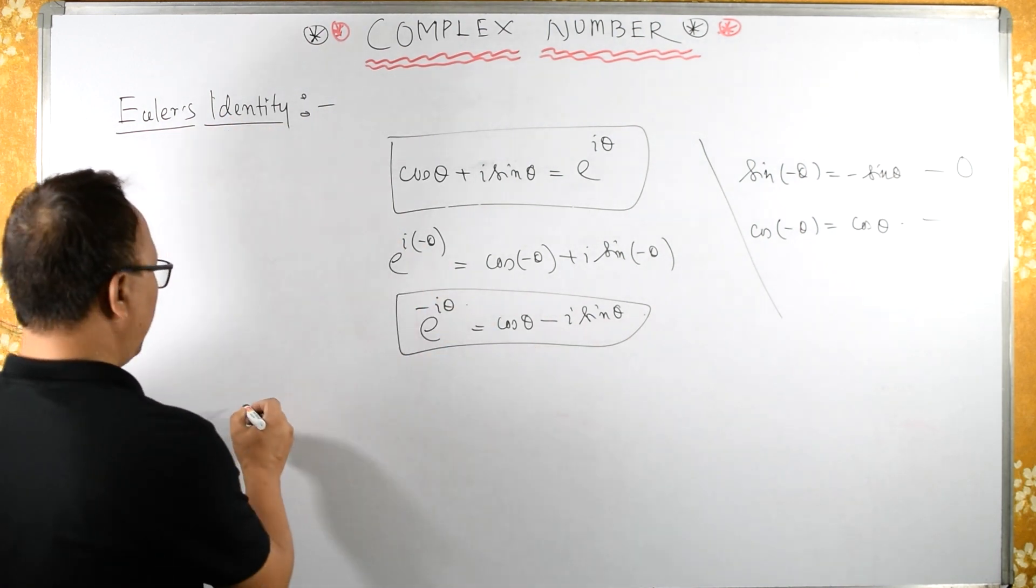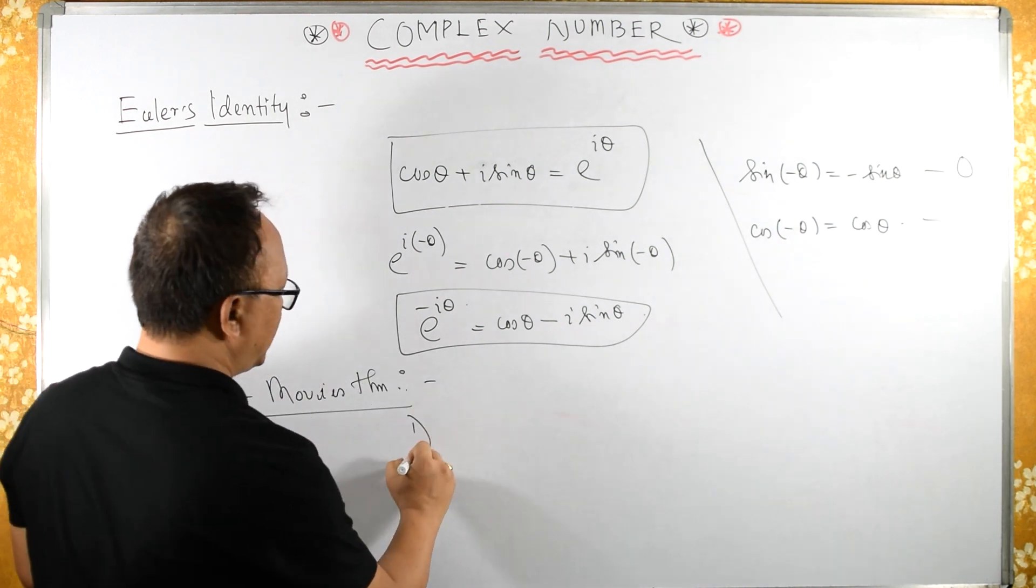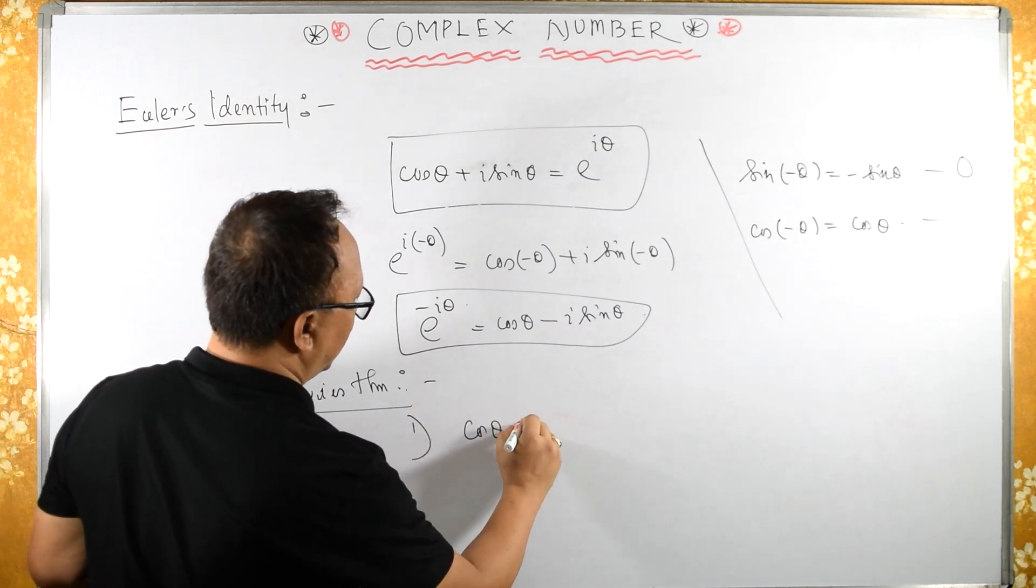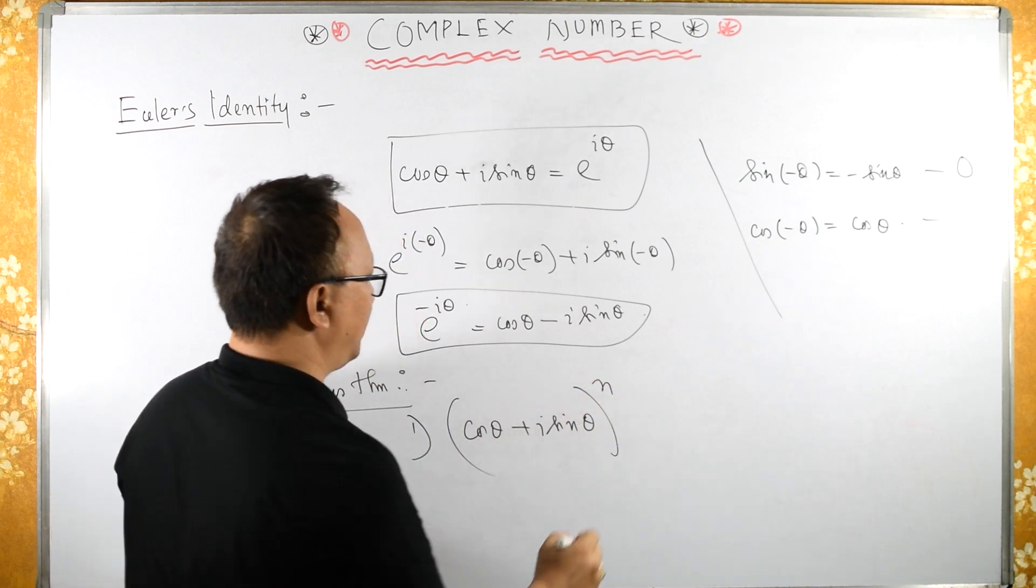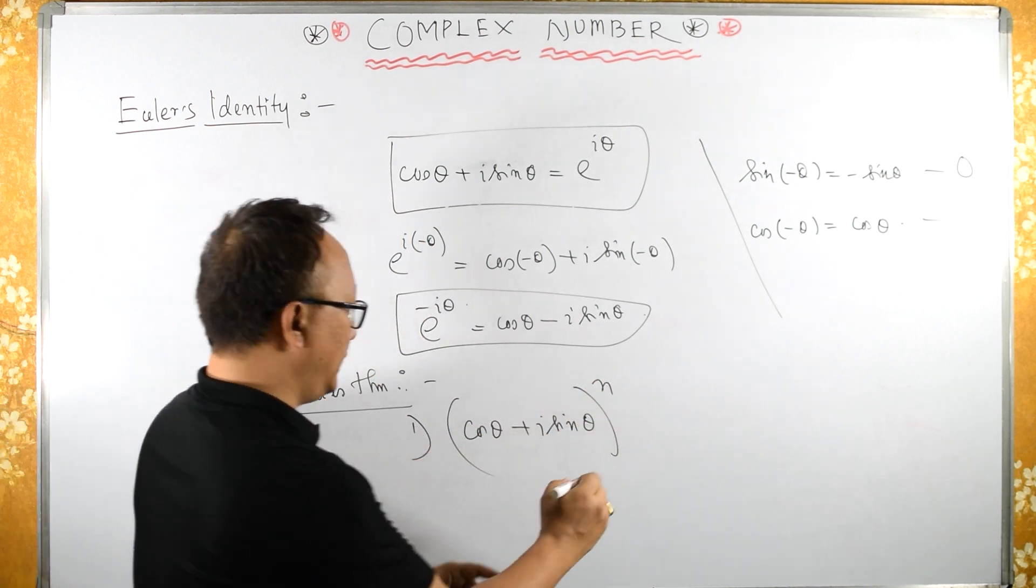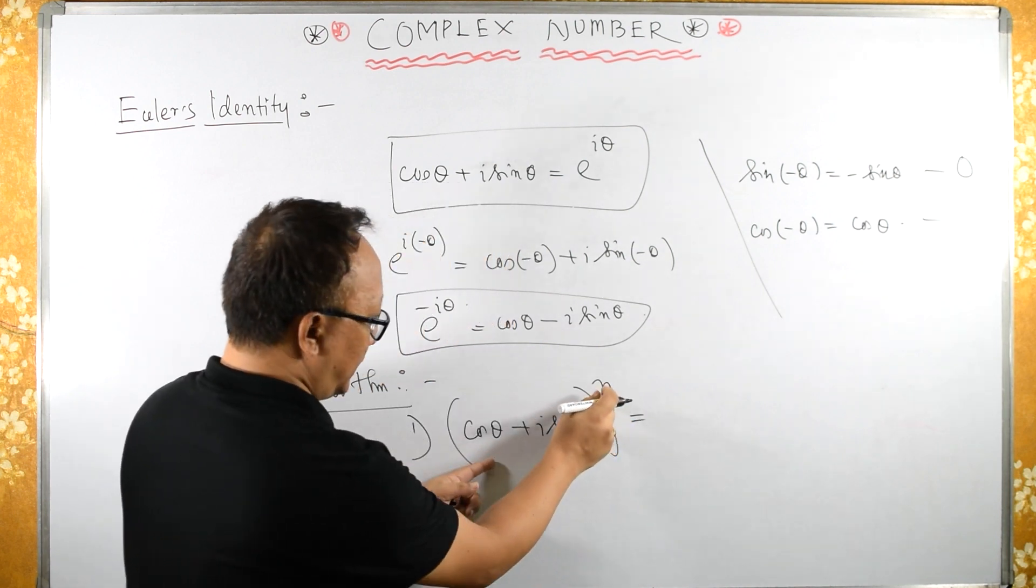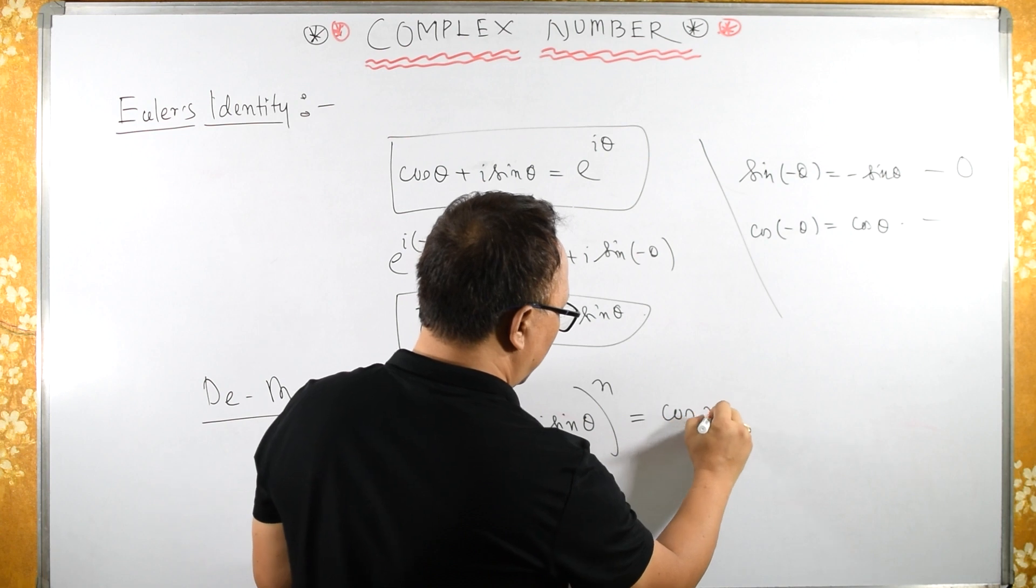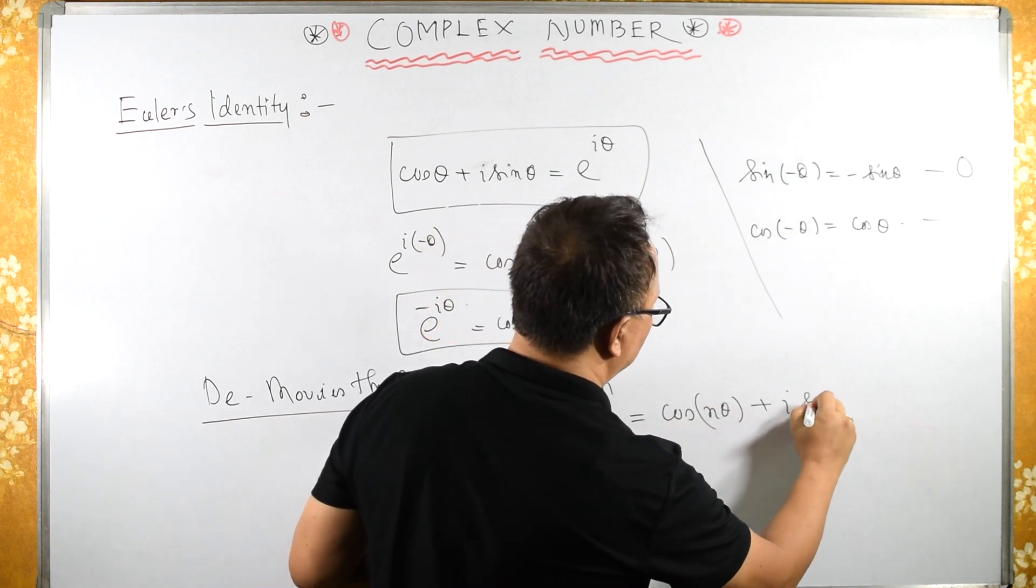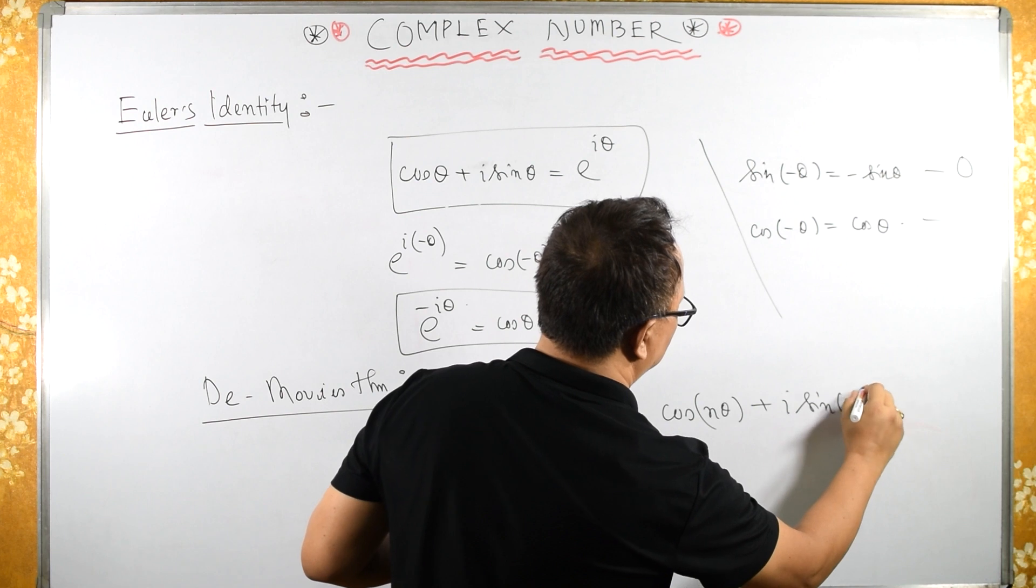Now we have De Moivre's theorem. It says that cos theta plus i sin theta raised to the power n is the same as cos n theta plus i sin n theta.